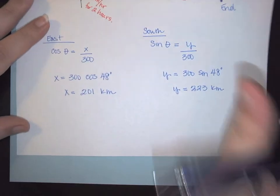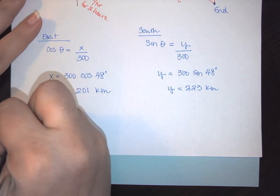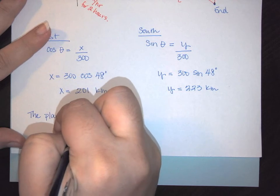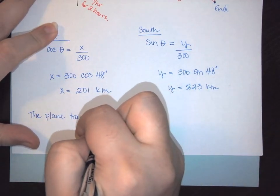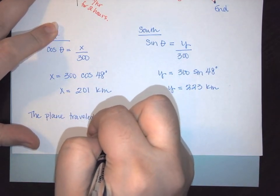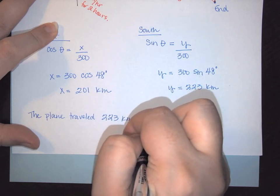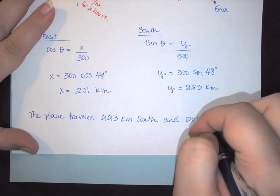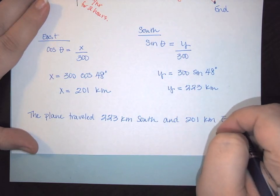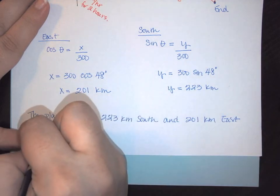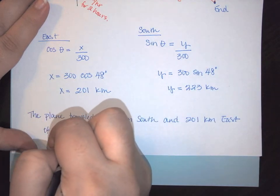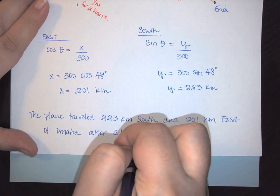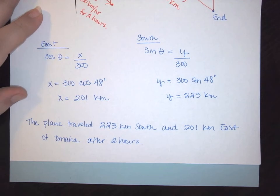So to actually answer the question, we would have that the plane traveled 223 kilometers south and 201 kilometers east of Omaha after two hours. And there you go.